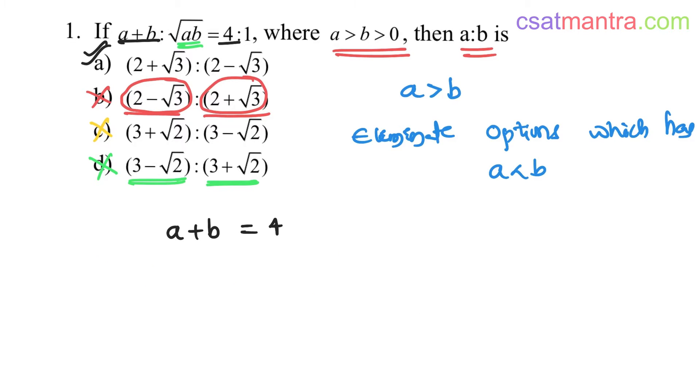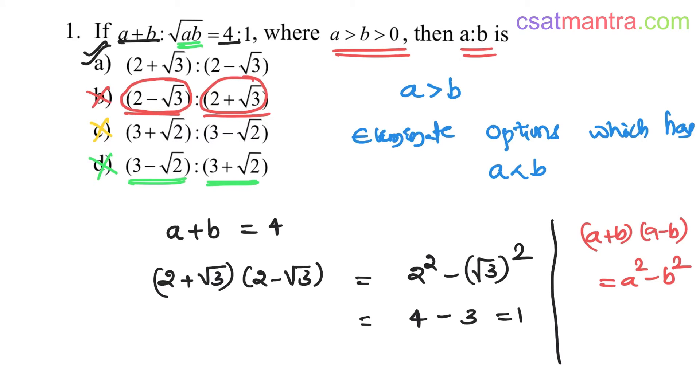You can check square root of AB also. 2 plus root 3 times 2 minus root 3 equals 2 squared minus root 3 squared. A plus B times A minus B equals A squared minus B squared, right? So 4 minus 3 equals 1. Yes, square root of AB equals 1. So A is your answer.